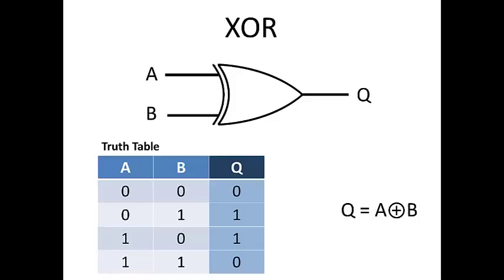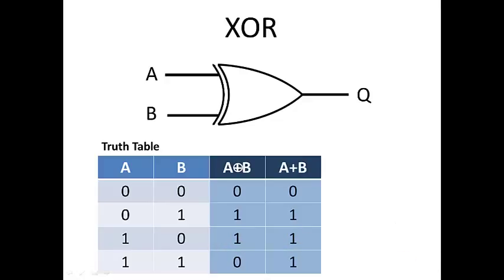So our truth table looks very similar to the OR, except that when both input signals are positive, you get a 0 output. So only when one or the other input is a 1, then you'll get a positive output. So let's compare that to a standard OR. The standard OR gate is very similar, except that when both inputs are 1, you get a 1 output for the OR. With the exclusive OR, only when one of the signals is 1, you get a 1 output.